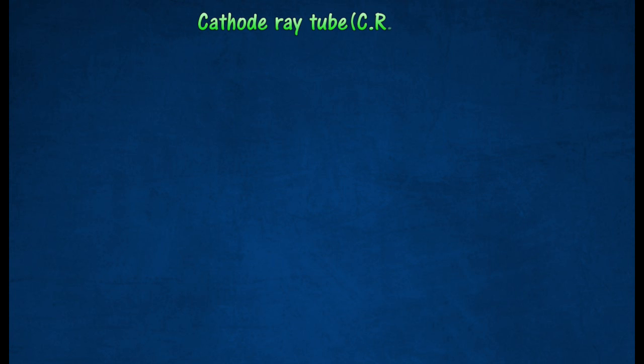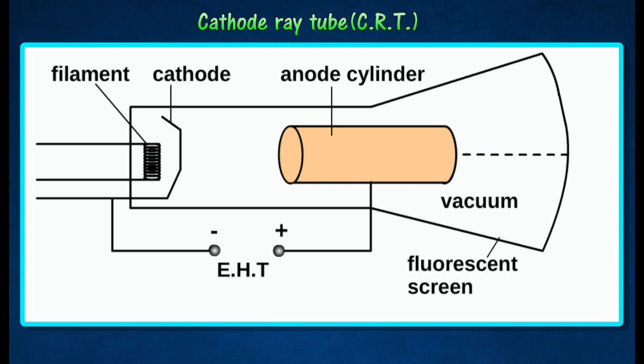The diagram shows the basic structure of a cathode ray tube. A cathode ray tube is a highly evacuated vacuum tube consisting of an electron gun, deflection system, and fluorescent screen.